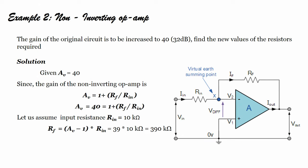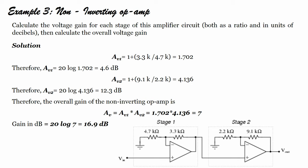Let us solve another problem. The gain of the circuit is to be increased to 40. Find the values of resistors required. Given Av = 40, we know Av = 1 + Rf/Rn. With Rn = 10 kΩ, solving gives Rf = 390 kΩ.